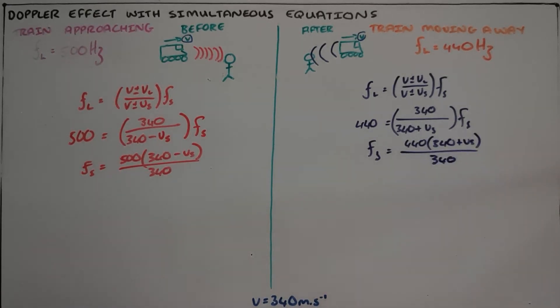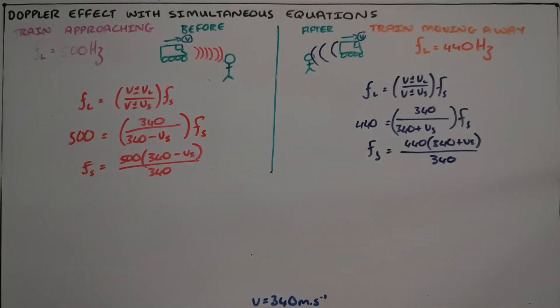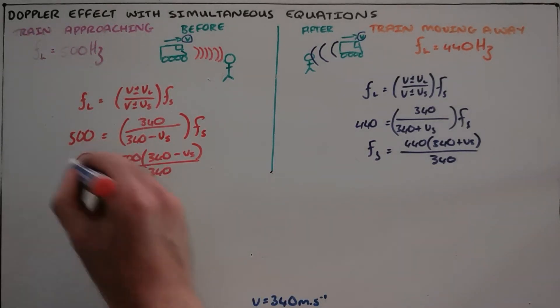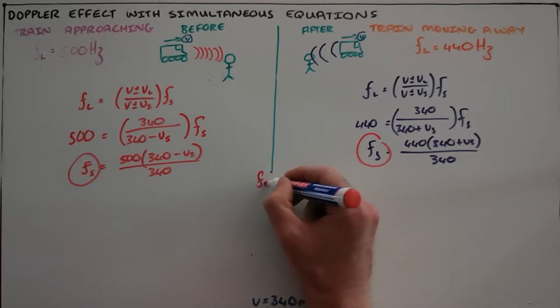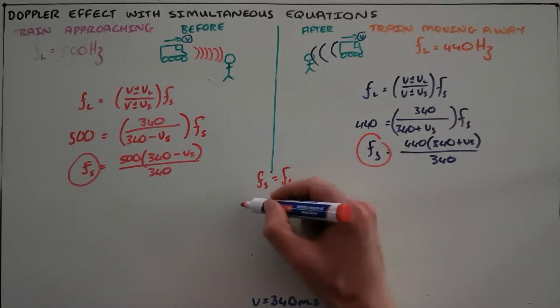And we now have two equations and two unknowns. What we can now safely say is that this train's frequency has not changed. Therefore, since the frequency of both of these sources is the same, we can then say that these two must be equal to each other.